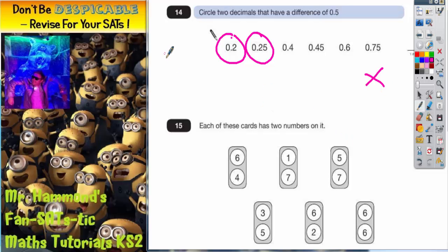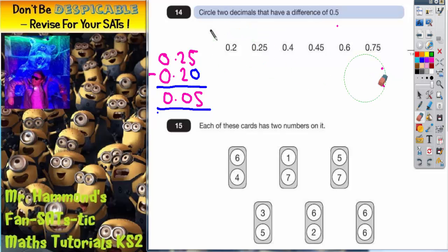Let me explain why. If you start with 0.25 and you subtract, because we're trying to find the difference, 0.2. Remember 0.2 is the same as 0.20 so there's actually a 0 on the end there. And if you subtract them, 5 take away 0 is 5, 2 take away 2 is 0, 0 take away 0 is 0. So actually the difference between those two is 0.05 and that is not what this says. 0.5 and 0.05 are two completely different numbers. So those two can't be the answer.